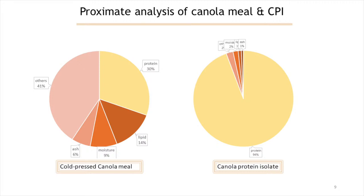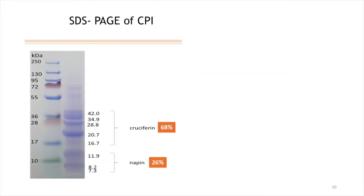Both lipids and ash content were reduced to 1%, and moisture and other components were reduced to 2%. The protein fractions analyzed by SDS-PAGE under reducing conditions show approximately 68% cruciferin with a molecular weight range from 16.7 to 42 kDa, and 26% napin with a molecular weight range from 7.3 to 11.9 kDa.